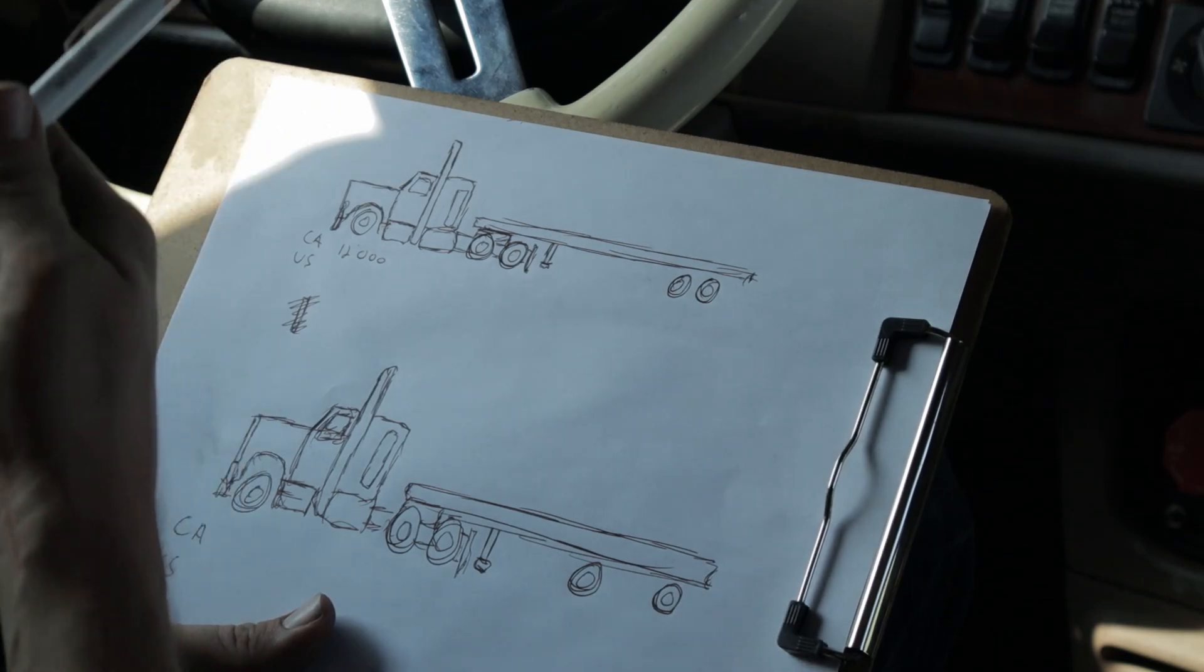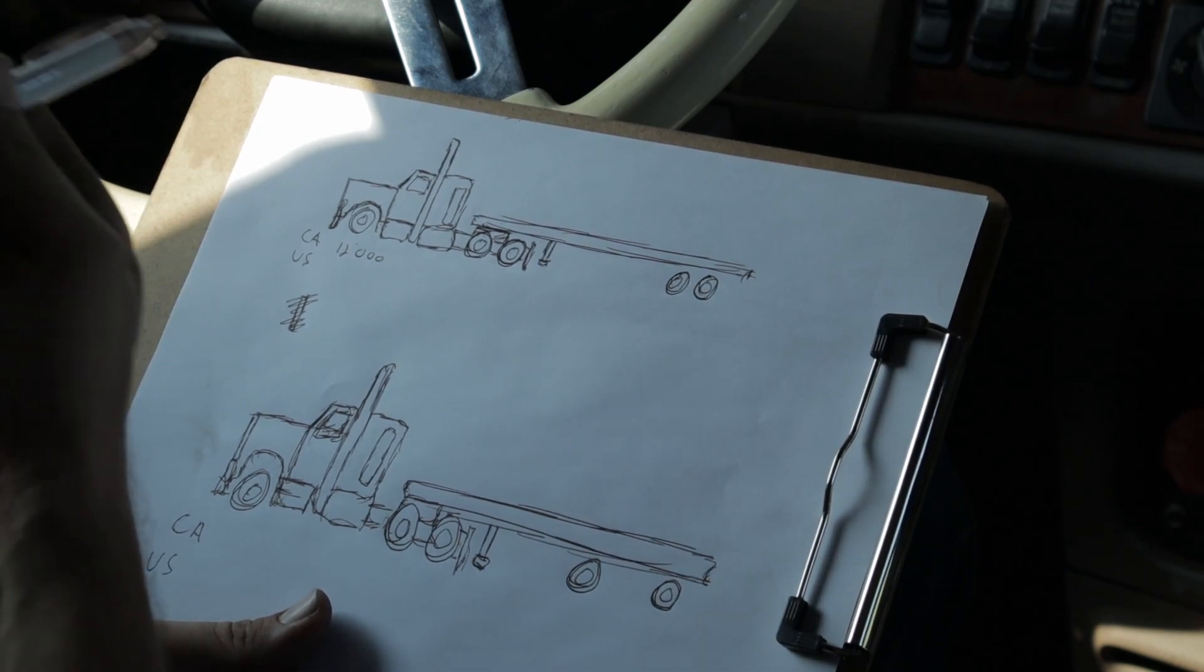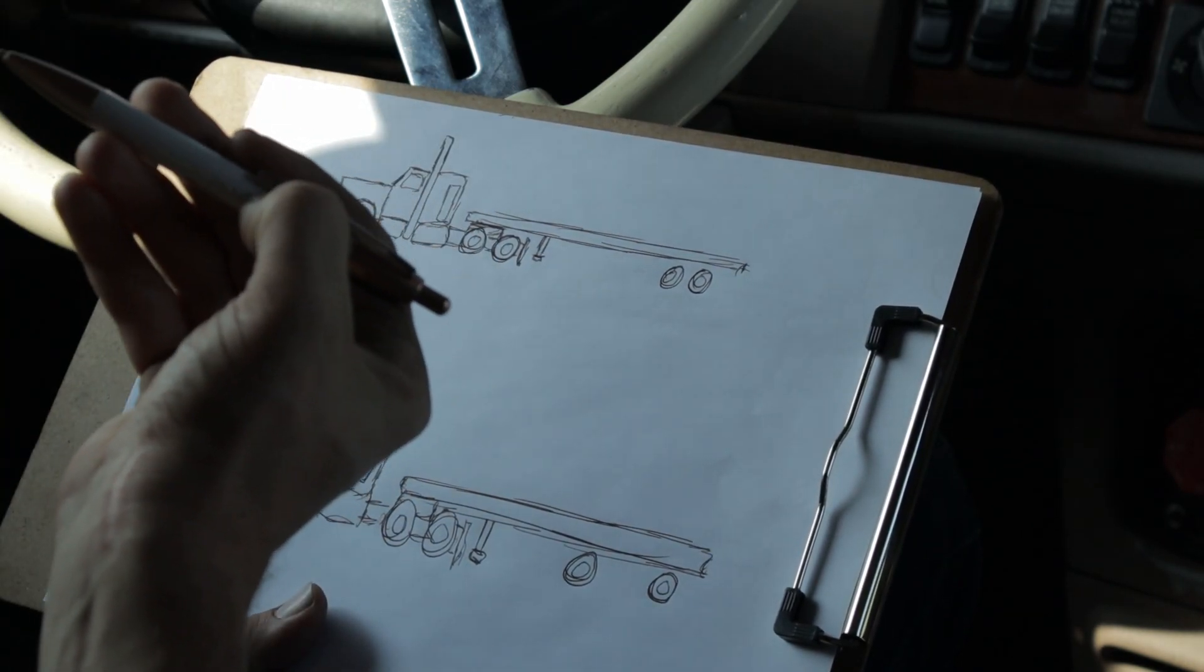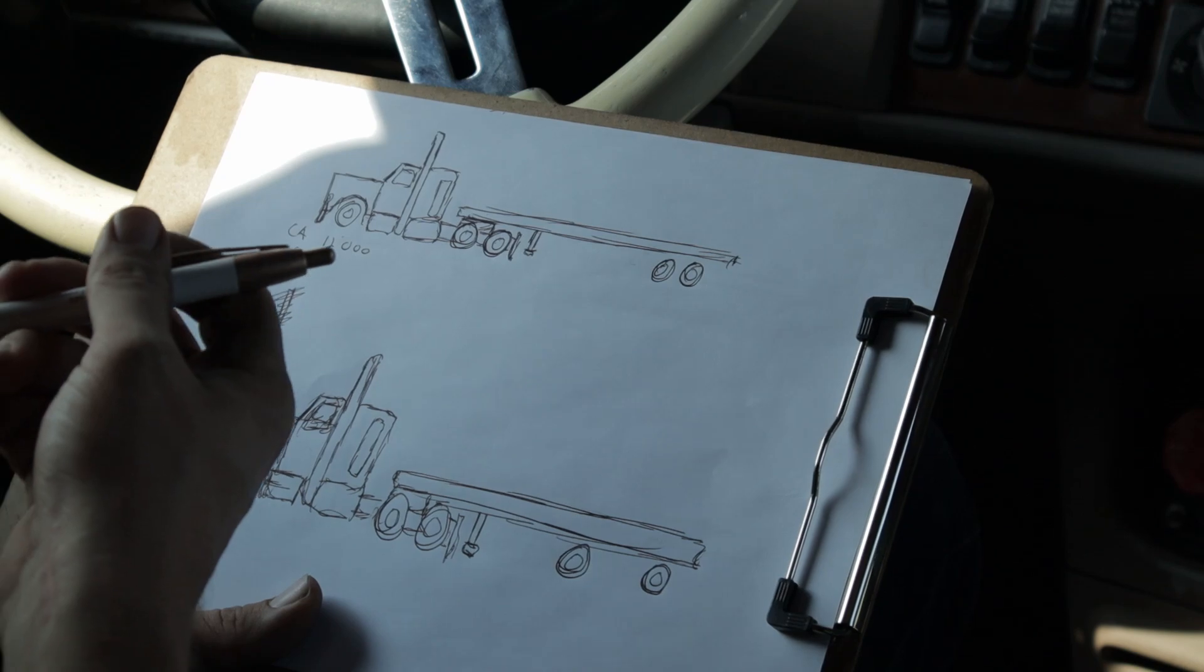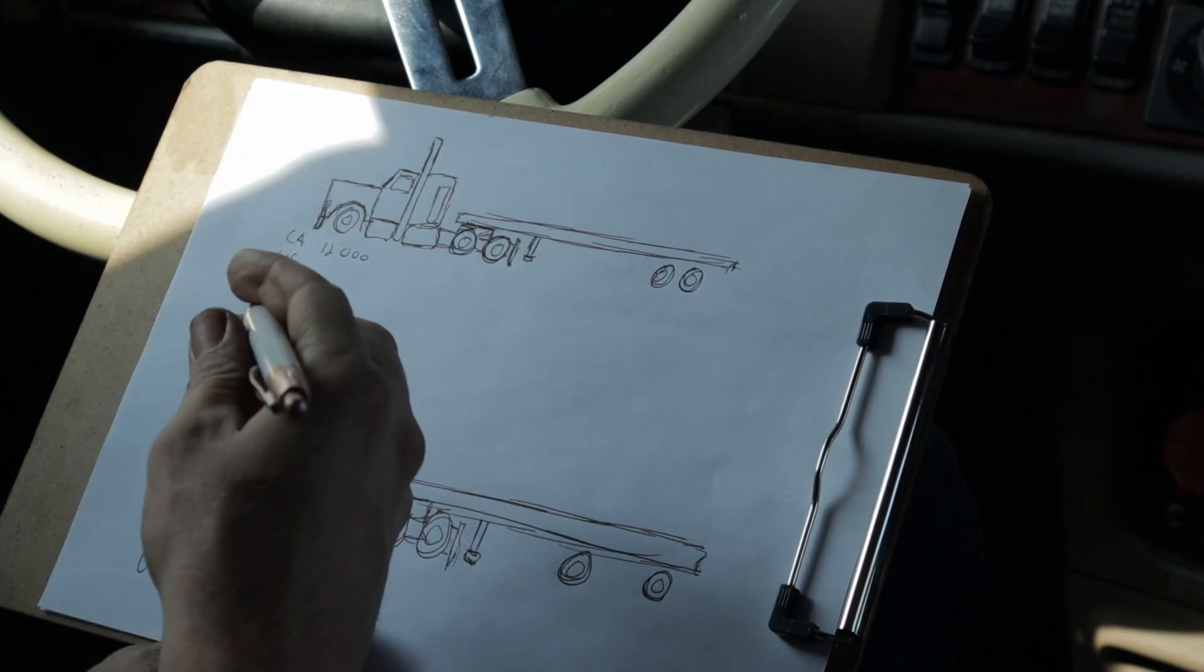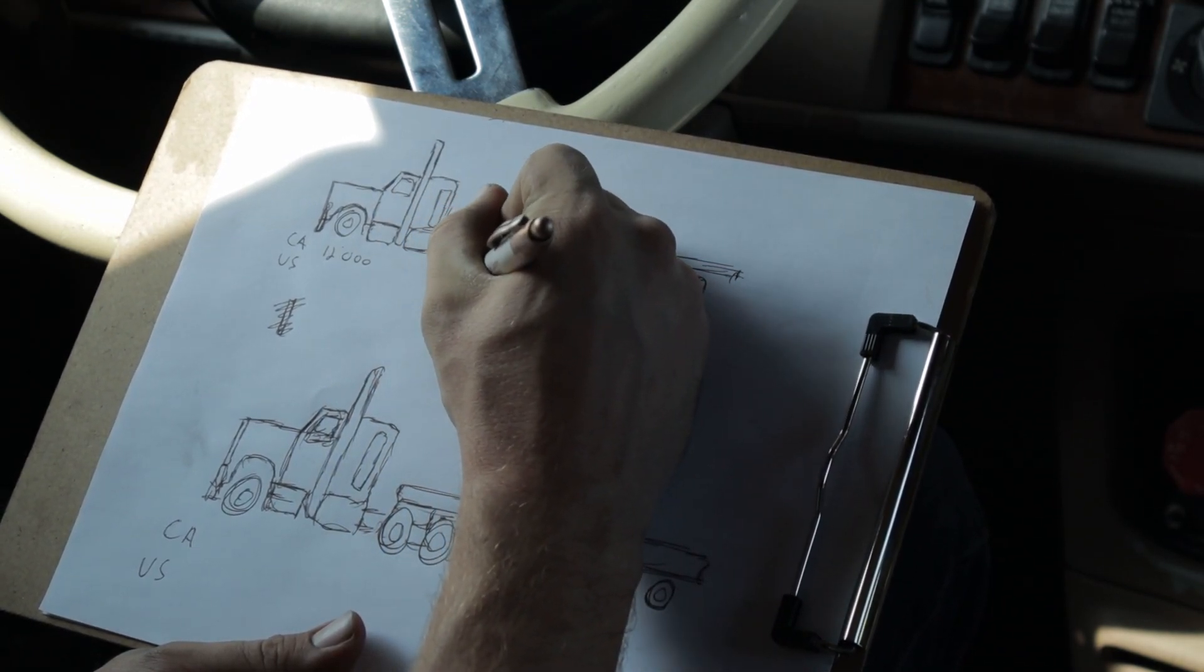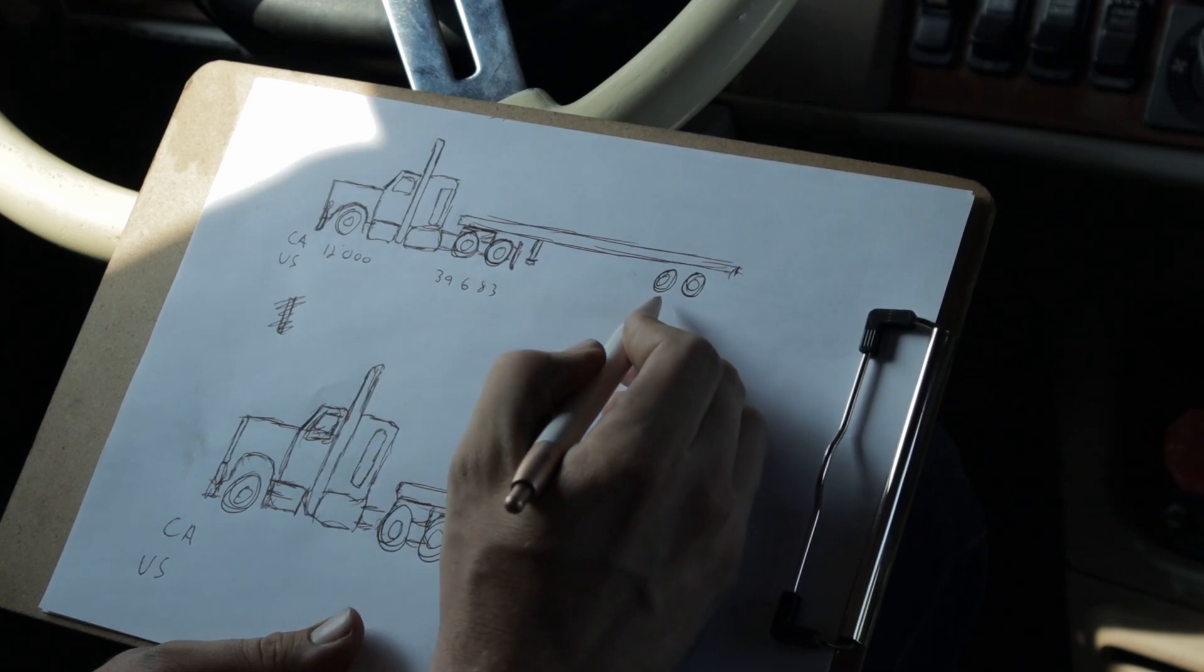But for these intents and purposes we're going to go with 12,000 pounds on the steers, because that's what I've always done. Canadian weights are done in kilograms, but to keep things easy for this video I'm going to transfer everything over to pounds. So you have 12,000 on your steers, and in Canada you can have 18,000 kilograms on your drives, which is about 39,683 pounds. Same with the rear axles, 39,683.